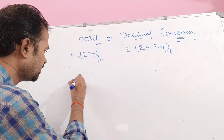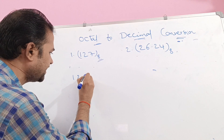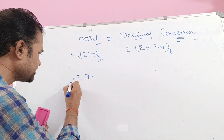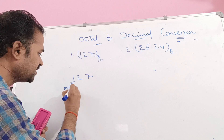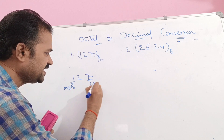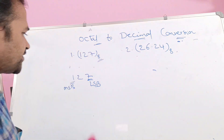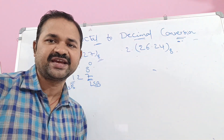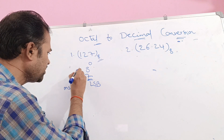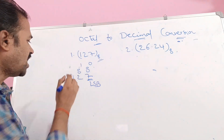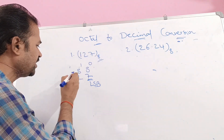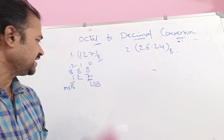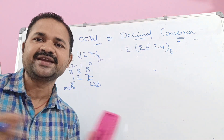Here, 1 is the most significant bit, whereas 7 is the least significant bit. On top of 7, we write 8 power 0 — this is the least significant bit. On top of 1, we write 8 power 1. On top of 2, we write 8 power 1. On top of 1, we write 8 power 2. Then we simply perform the multiplication and add the terms.